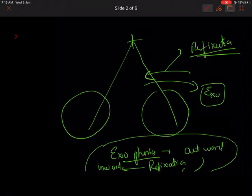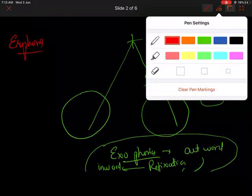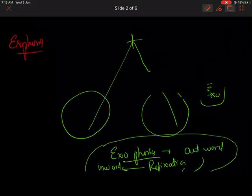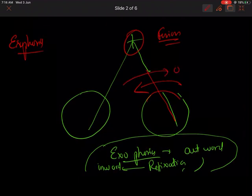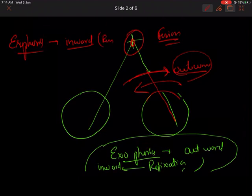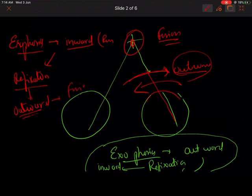Similarly, in esophoria, the eye has moved inward upon breaking the fusion. Upon re-institution of the fusion, the eye will come outward — this is called the refixation movement. So in esophoria, the eye has moved inward upon breaking fusion, and the refixation movement is outward to get the eye central or to get the fusion back. This is the basic concept behind the cover-uncover test.